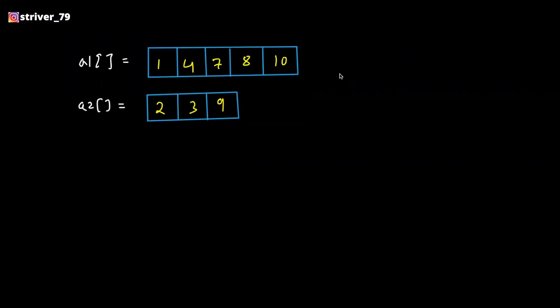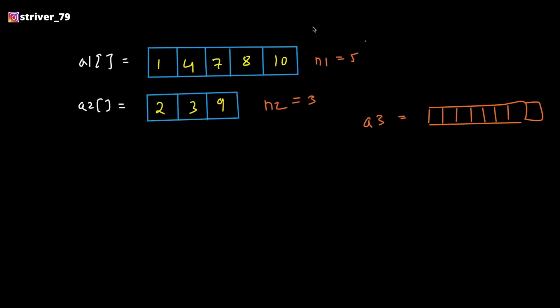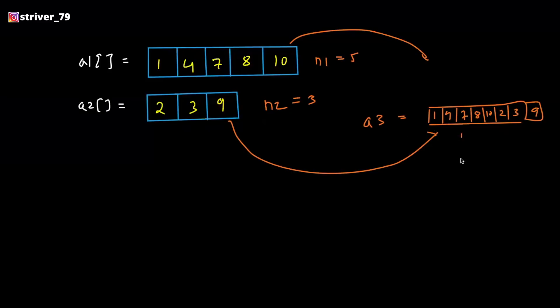If you are in an interview, the interviewer will never tell you to sort without using extra space. He will tell you to sort two sorted arrays. In that case, you're going to tell him in the first step that you're going to use a third array, let's say array three, which will have a size equal to n1 plus n2. Over here it's 5, over here it's 3, so you will have an array of size 8. Then you're going to plug all the elements from a1 and a2 into this, and then sort this array.